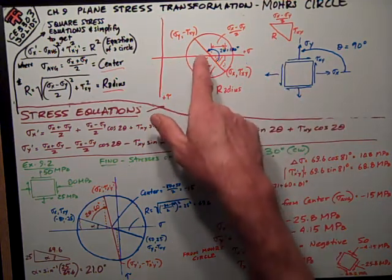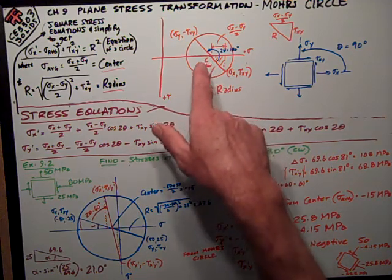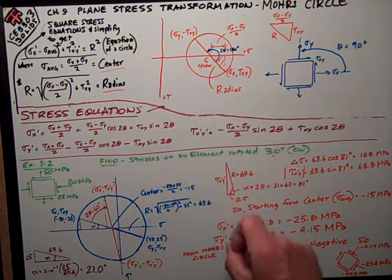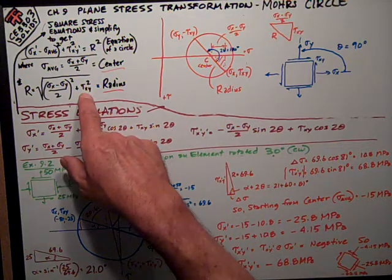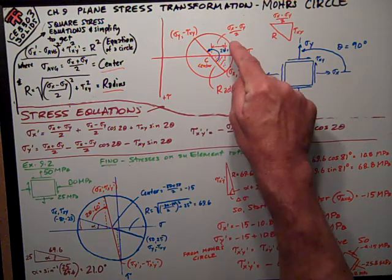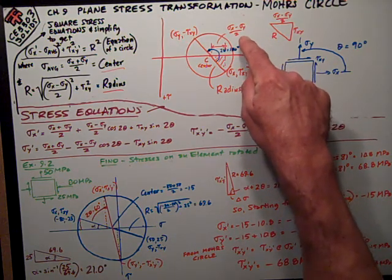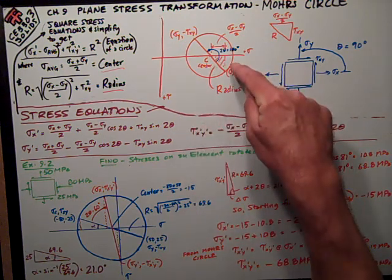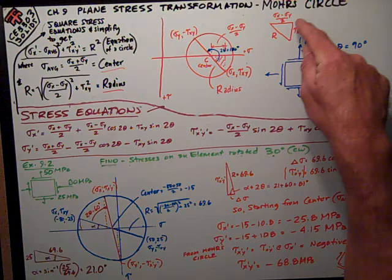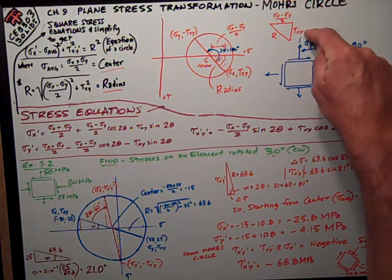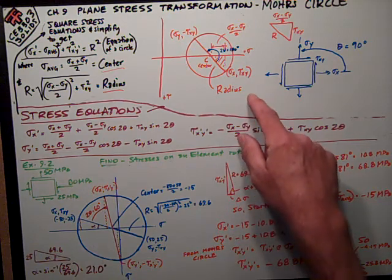That line passes through and intersects the horizontal sigma stress axis at the point that's the center, which is really just the average of those two, sigma y and sigma x divided by two. That diameter, half of that is the radius, which works out to be this number. This distance, sigma x minus sigma y divided by two, is that horizontal distance. The vertical distance is just tau xy. Using Pythagorean theorem, square root of the square of that plus the square of that equals the radius.